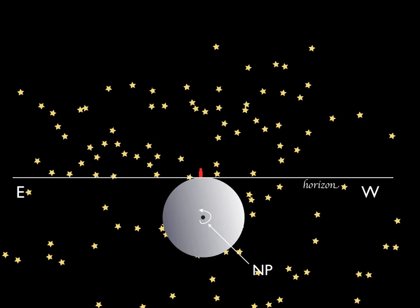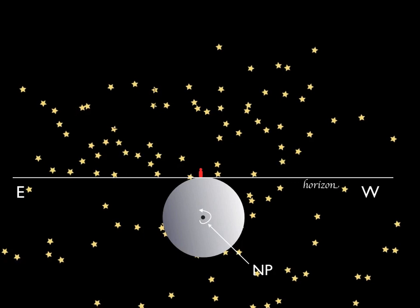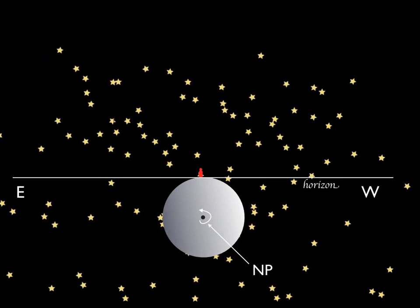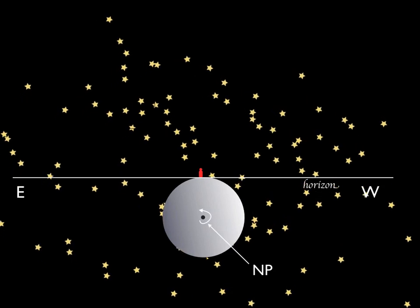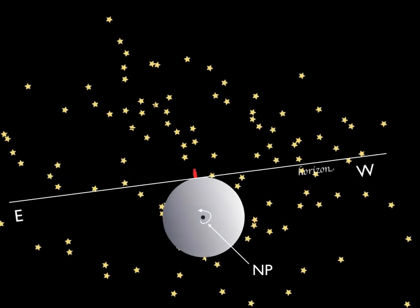So what direction do we move in? Stars, and the Sun, and the Moon, and planets rise in the East and set in the West, because the Earth spins from West to East.